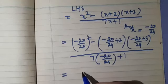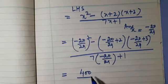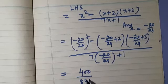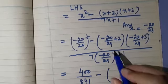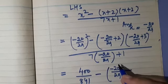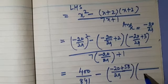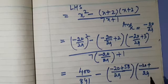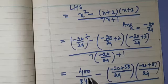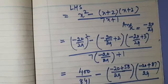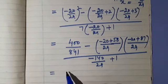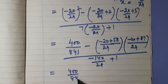20 squared is 400 and 29 squared is 841; the square of a negative term is positive. Now taking 29 as LCM: minus 20 plus 2 into 29, that means 58. Similarly, taking 29 as LCM: minus 20 plus 29 into 3 means 87. In the denominator, simplifying gives minus 140 upon 29 plus 1.